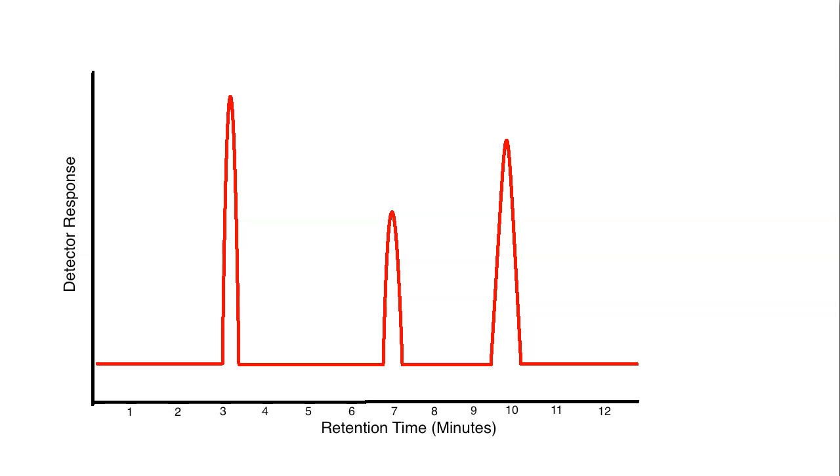Now the question becomes, if you have a printout like this and you know you have three different compounds, which compound is going to be which? Let's just use for a generic example, X, Y, and Z. So you have three compounds in a solution, and you need to figure out which one relates to which peak.